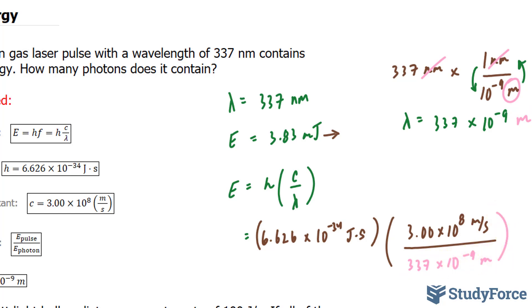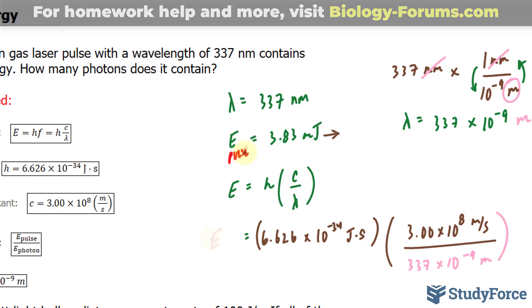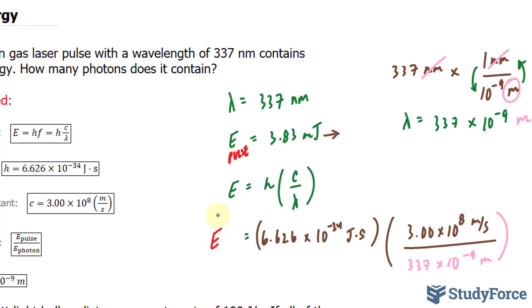Now it's important to note, as mentioned earlier, this represents the energy of the pulse. So I'll write that in. Whereas this E represents the individual energy of a single photon. Let's go ahead and find what this is. We'll use our calculator.